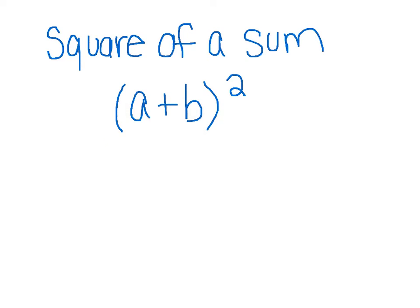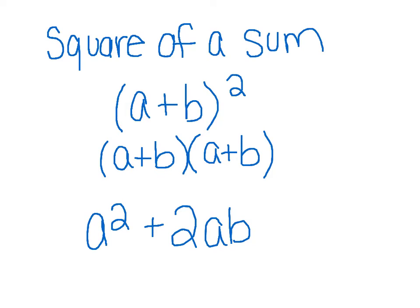You can write this out as a plus b times a plus b, because when we're squaring something, we're taking that base and multiplying it by itself two times. The formula that follows is a squared plus 2ab plus b squared. a times a is a squared. a times b plus b times a is essentially a times b plus a times b. So we're going to have two of the a times b's plus b squared.